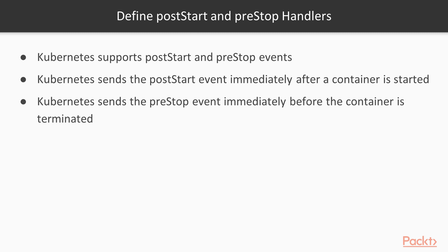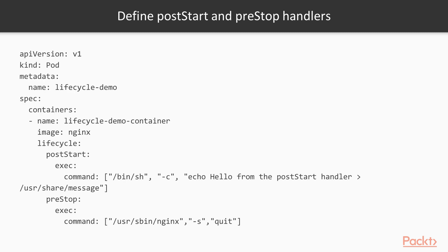Defining a post-start and a pre-stop handler: Kubernetes sends a post-start event immediately after the container is started, and a pre-stop event immediately before the container is terminated. If you want to have a look at YAML, you can define it like this. You've got your YAML API version, this is a kind Pod, metadata, containers, container name, and image. This is the lifecycle section — you've got your post-start here, executing a command, printing 'Hello from post-handler' and putting a message in the message file. And you've got a pre-stop before the container dies — doing a nice quit of Nginx, or sending a message to your log that the container has died.